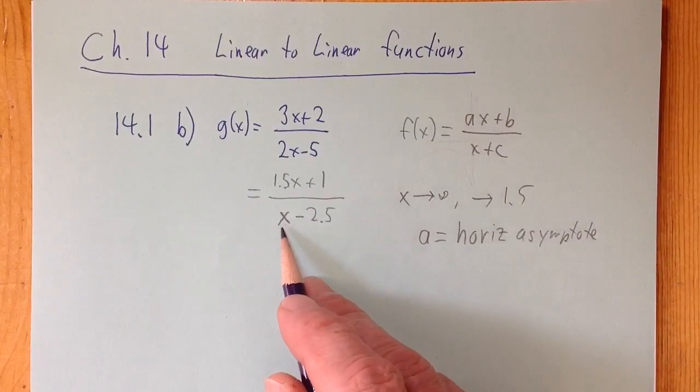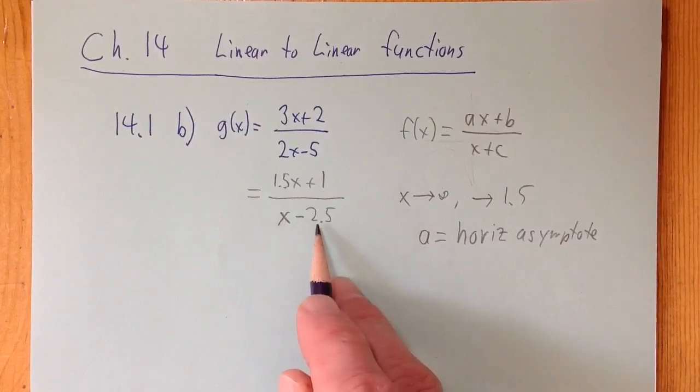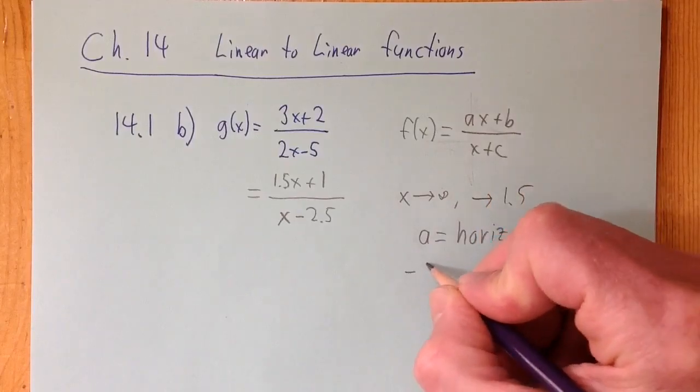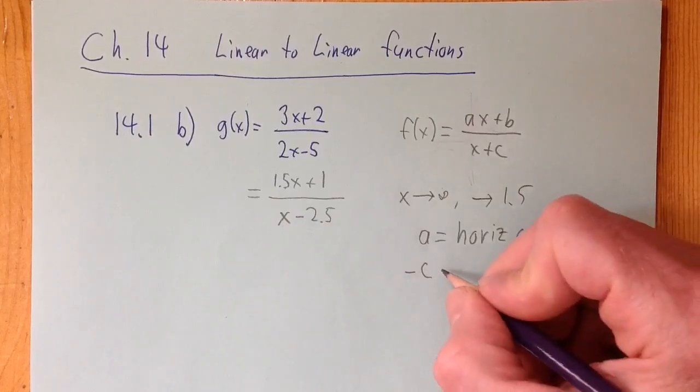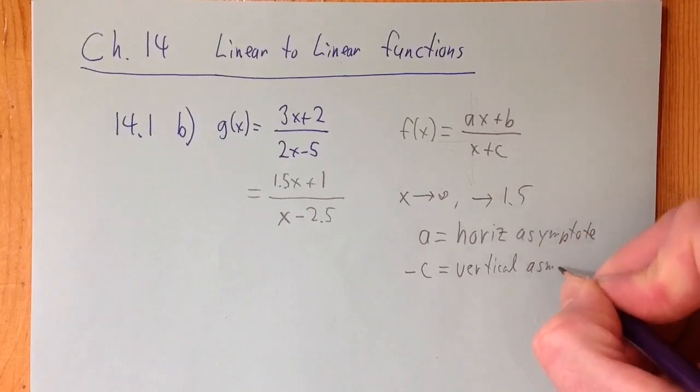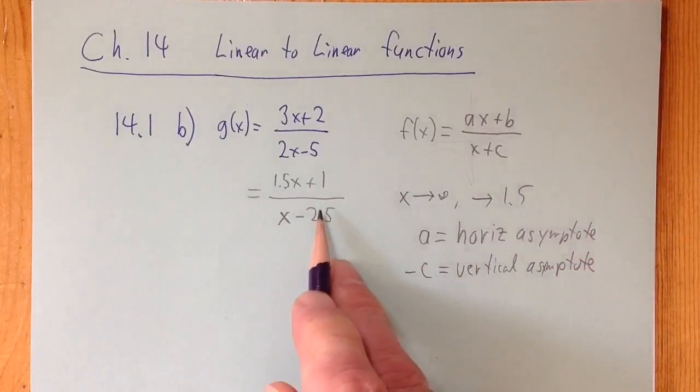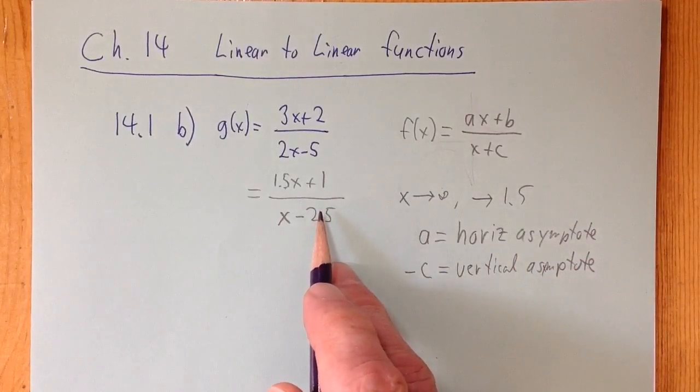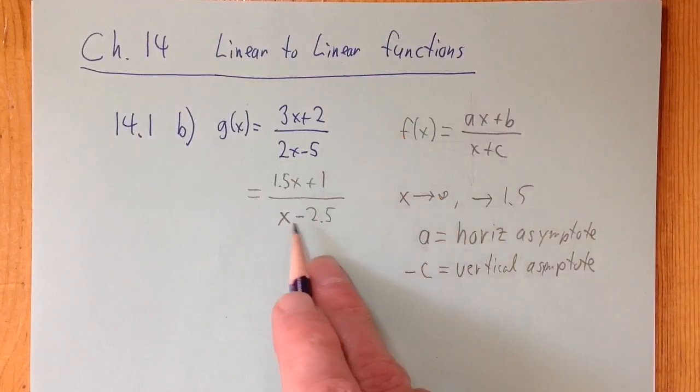Now, this blows up when x equals 2.5. So when you get 0 on the bottom, that's when this blows up. So this letter here, which is c, so negative c, so 2.5 in this case, right? Because when x is 2.5, 2.5 minus 2.5 is 0. That is the vertical asymptote, because it goes to infinity, because this goes to infinity then, because dividing by 0 is undefined, or basically it's infinitely big. So the vertical asymptote, it goes up to infinity at 2.5.